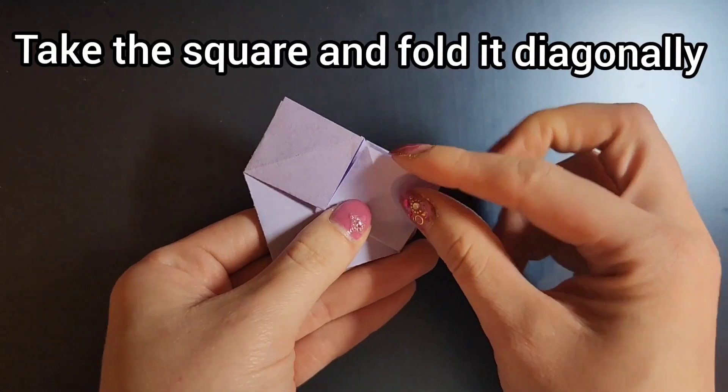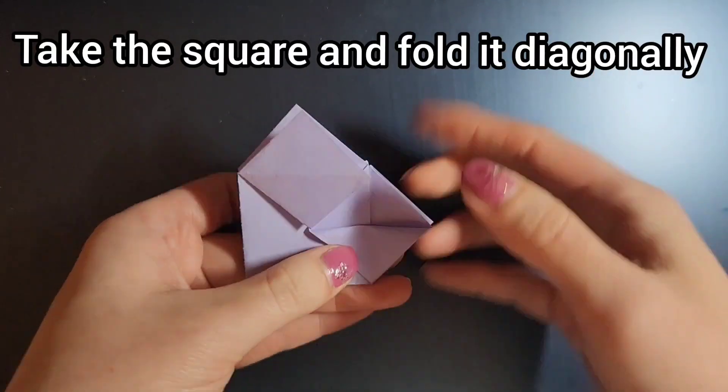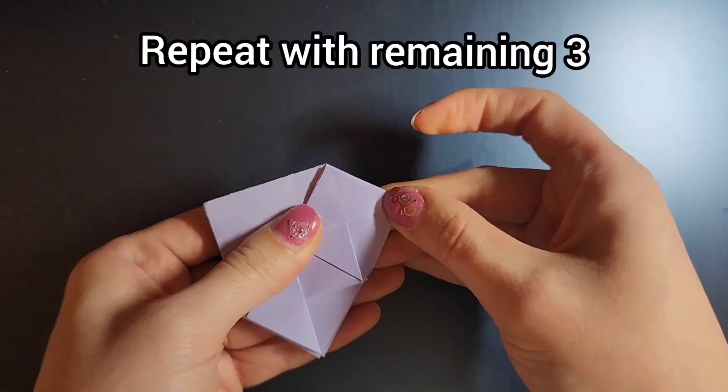Now take each square and fold it diagonally so it forms a triangle. Repeat this for the remaining three.